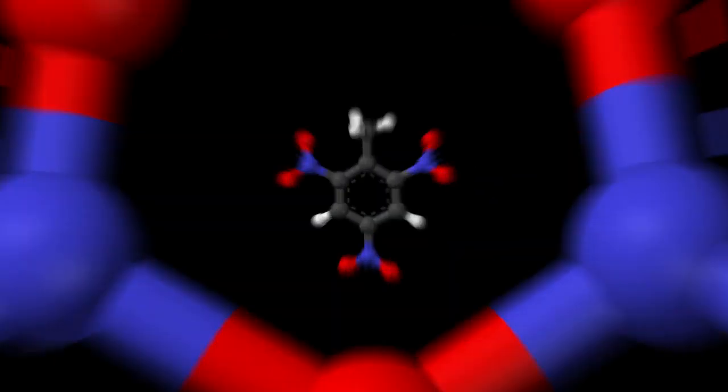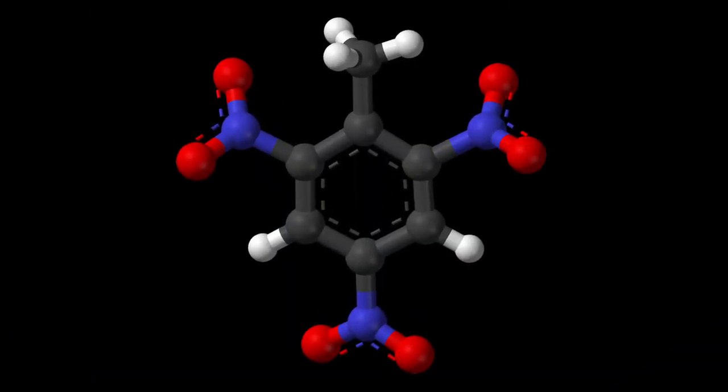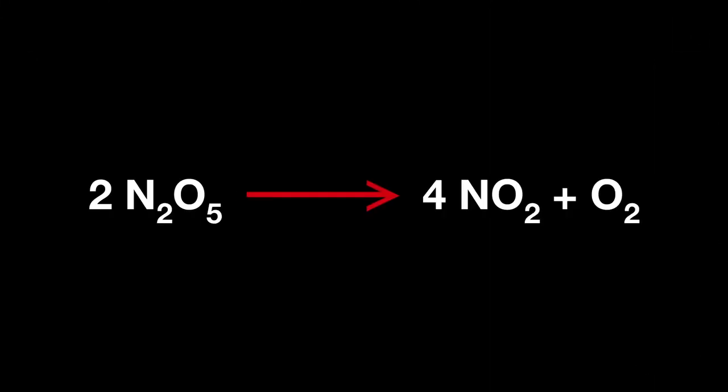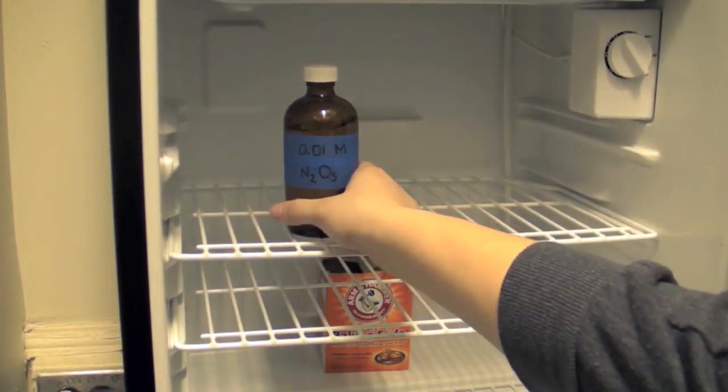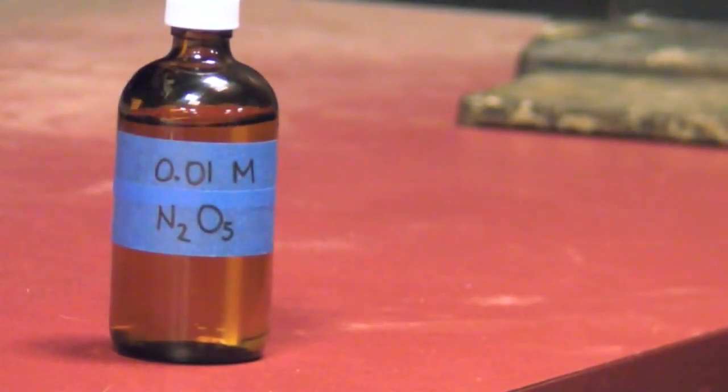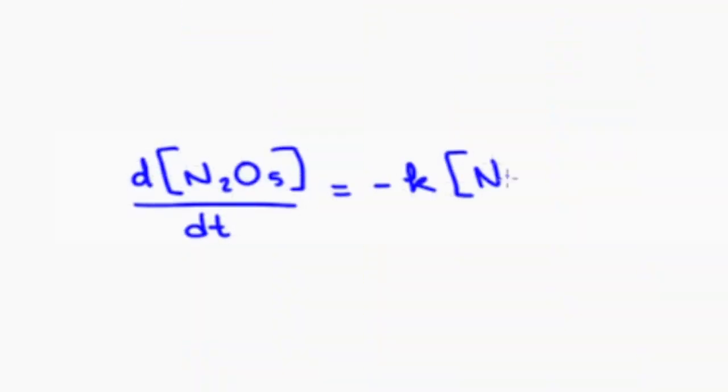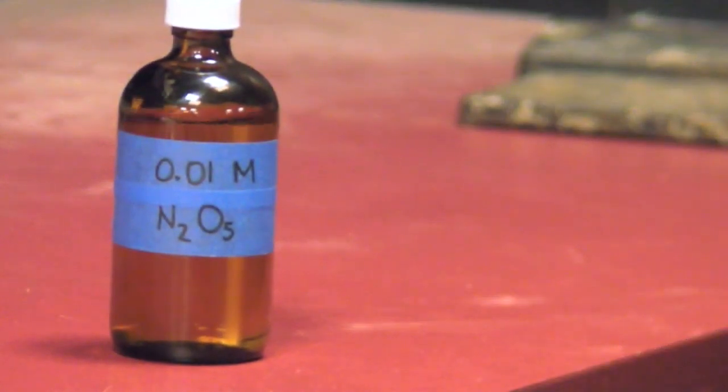N2O5 is a reagent that was used to synthesize explosives like TNT. Unfortunately, it decomposes relatively quickly at or above room temperature, so if you accidentally leave a bottle of it out on the counter, you could be in trouble. In this video, we'll approximate the decomposition rate equation to figure out whether a batch of N2O5 that you left at room temperature can still be used.